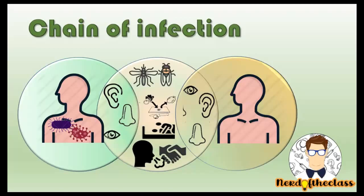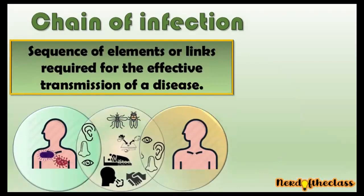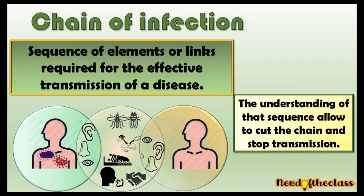What is the chain of infection? Well, this is an epidemiological model that is useful in the understanding of transmission of diseases. It's the sequence of elements or links that are required for the effective transmission of a disease.